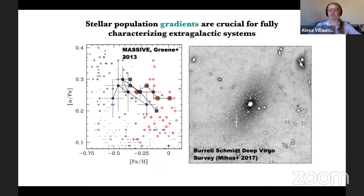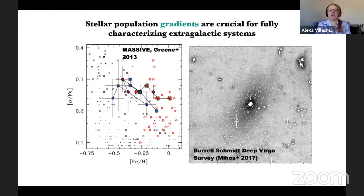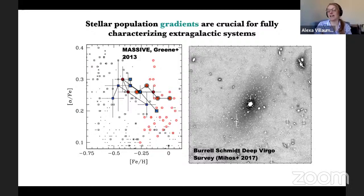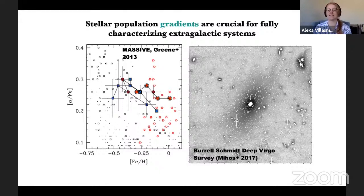So how do we test this idea? Stellar population gradients are crucial for fully characterizing these extragalactic systems. When I showed you that integrated spectrum, that was just one spectrum in the very center of M87. Now we're talking about getting spatially resolved spectra, which is how we get to a point where we can probe those sub-kiloparsec scales so important for constraining the different processes affecting galaxy evolution. This has become possible relatively recently due to the development of integral field unit spectrographs. Jenny Green led the MASSIVE survey looking at these massive early-type galaxies and using IFU data to get spatially resolved stellar population parameters.